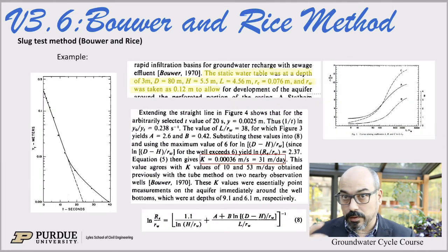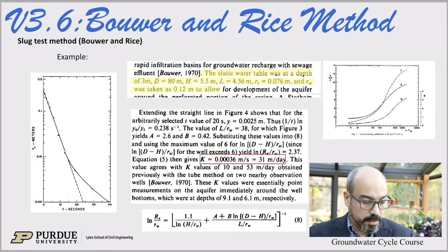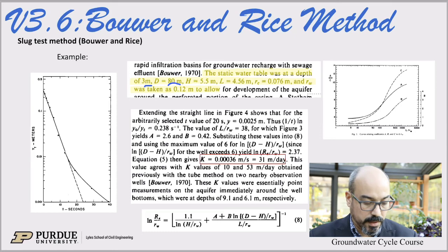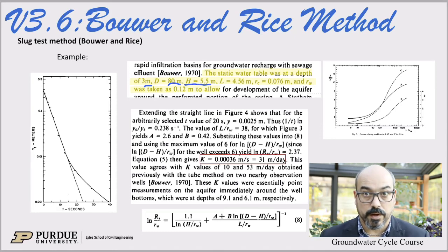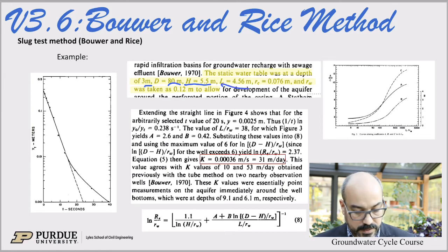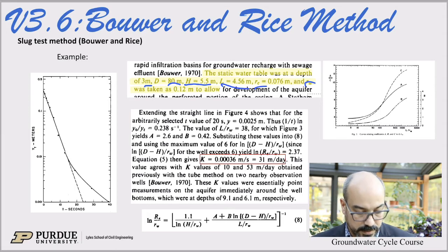Here's an example from that original paper. The static water table is at three meters, D is 80 meters — that's what we used to call B, the full depth of the aquifer. H is 5.5 meters, that's where the well is open. L is 4.56, and the casing and screen radius are given. So all parameters are provided.